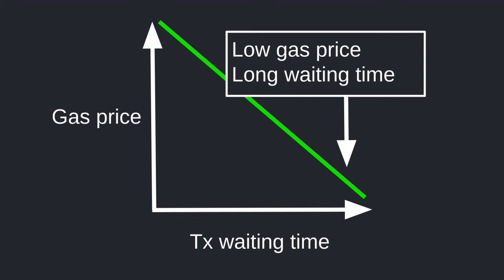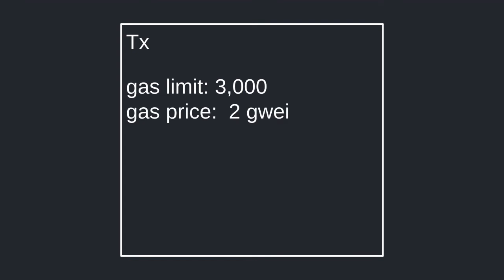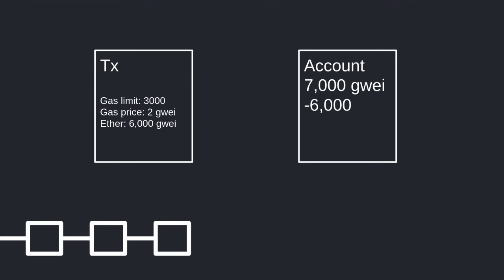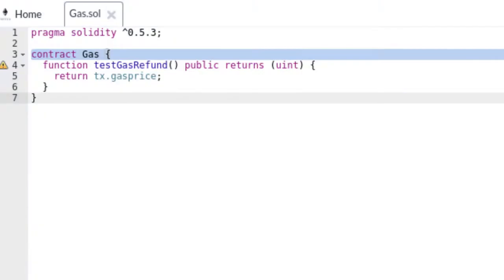After your transaction is included in a block, your account is refunded for any unspent gas. For example, I set the gas limit at 3,000 gas. I'm not in a hurry, so I set the gas price lower than average at 2 Gwei. I send the transaction with 3,000 gas × 2 Gwei per gas = 6,000 Gwei in total. The transaction uses 1,000 gas — that's 2,000 Gwei spent — so I get 4,000 Gwei refunded to my account.